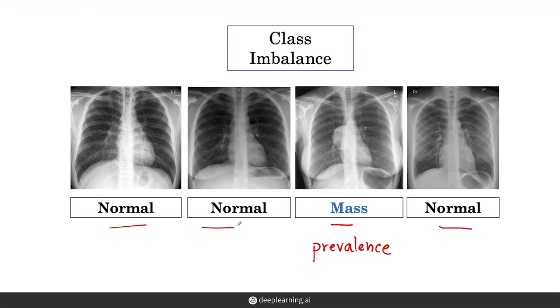In a medical dataset, you might see 100 times as many normal examples as mass examples.